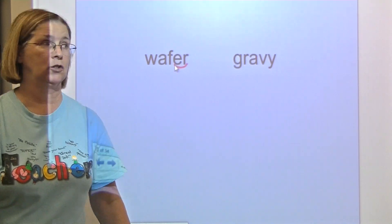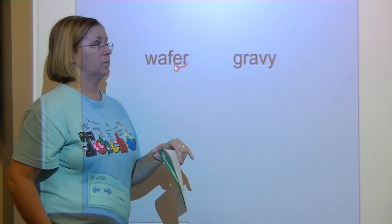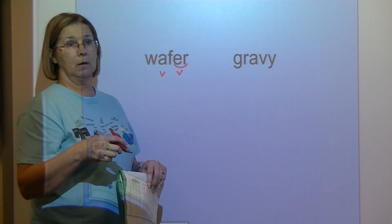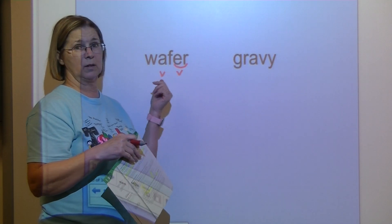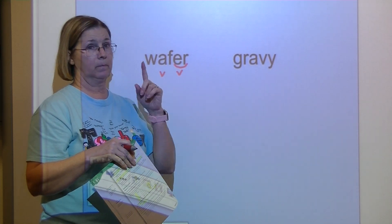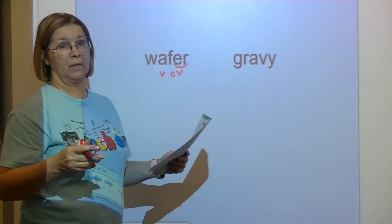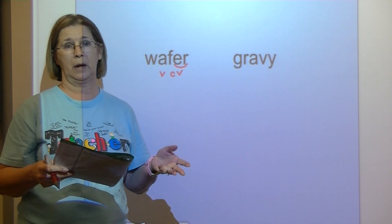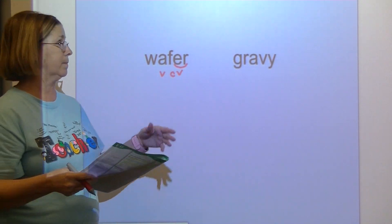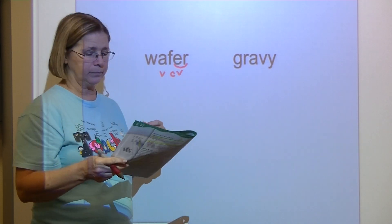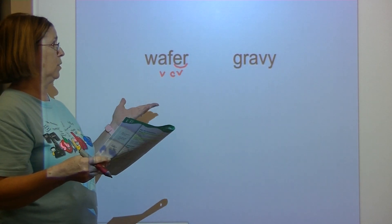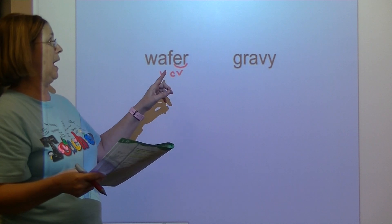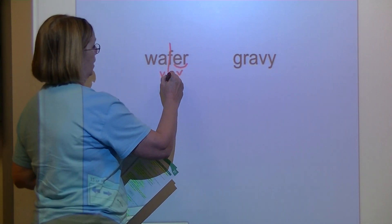We've got to do a syllable division on this word. Put a V under each vowel. Normally we look between them and there are two consonants, but this time we only have one consonant — so label it C. That's not a VCCV pattern. What we've been doing is a VCCV pattern where you divide between the consonants. This time it's called a VCV pattern. Most of the time, when you have a VCV pattern, you divide it after the first vowel — right there.